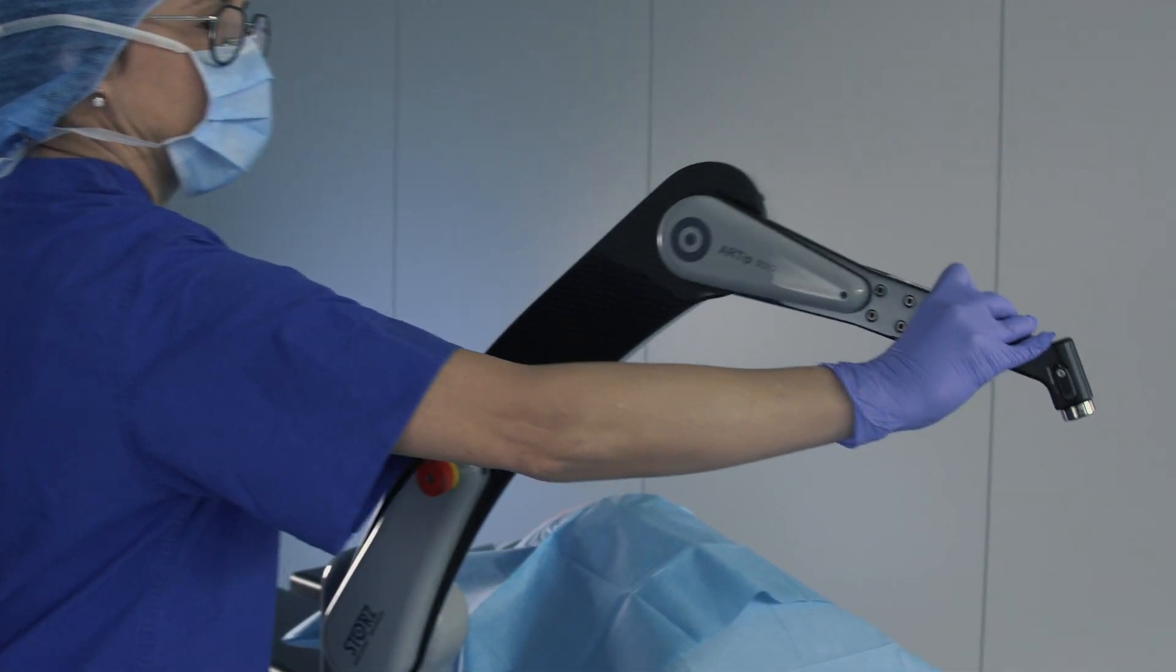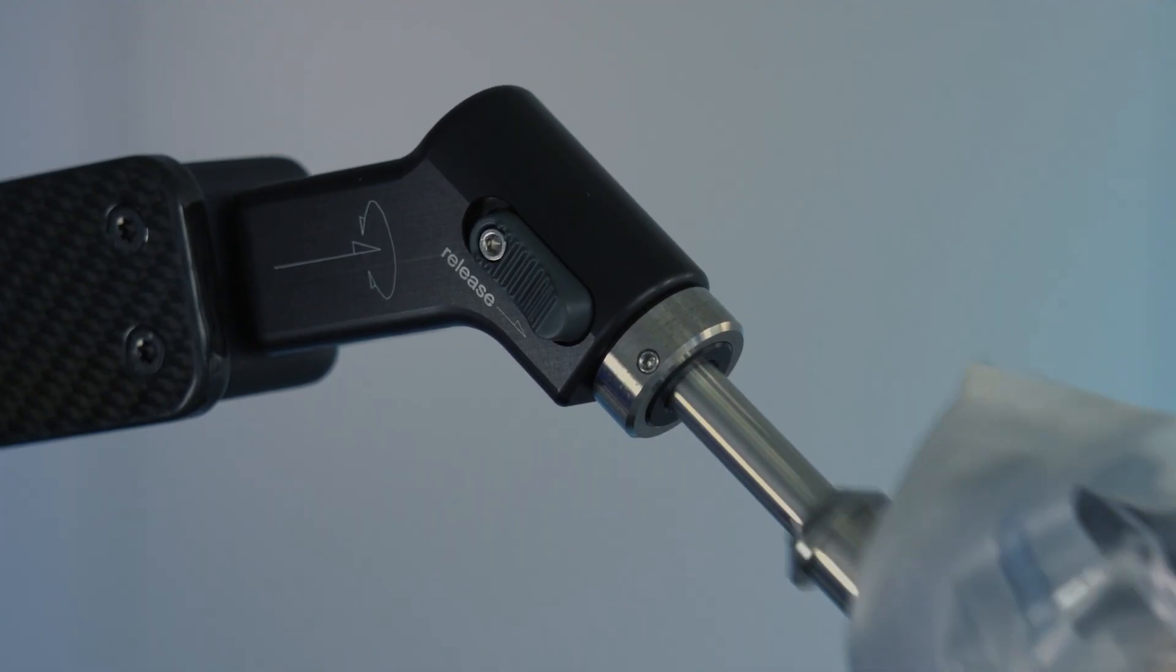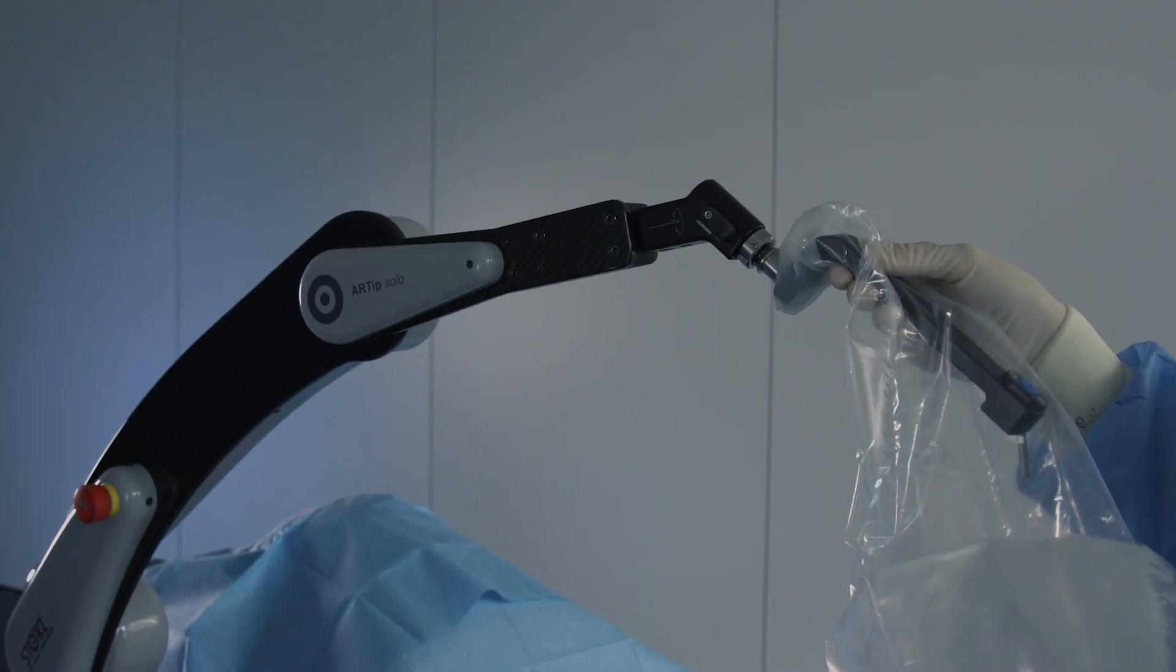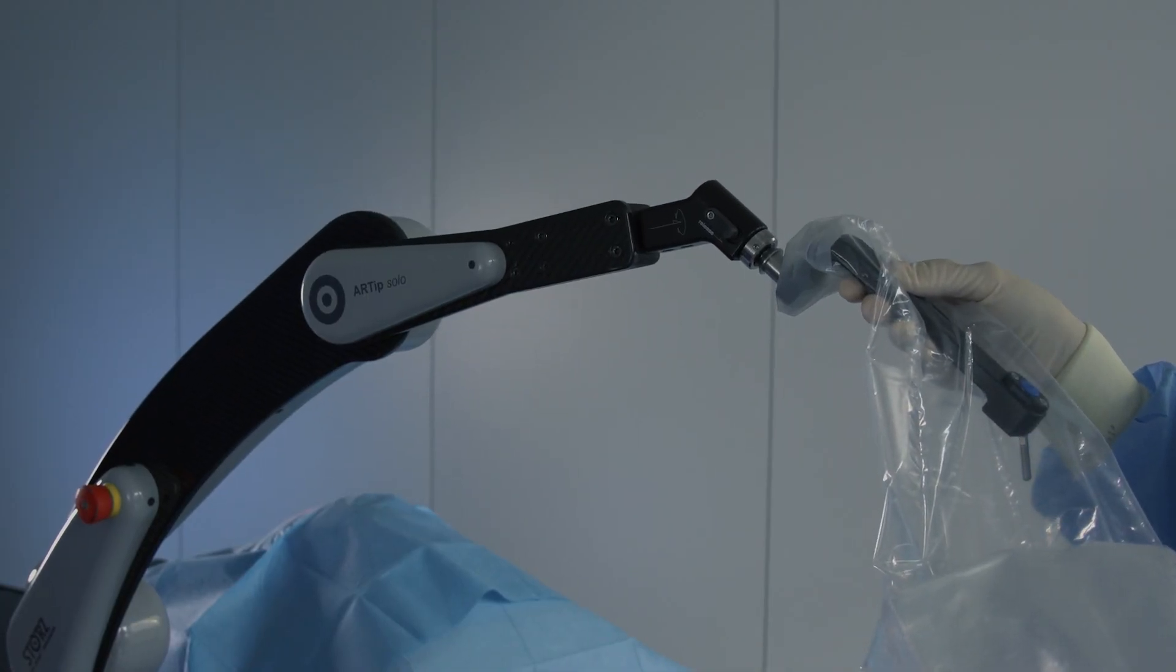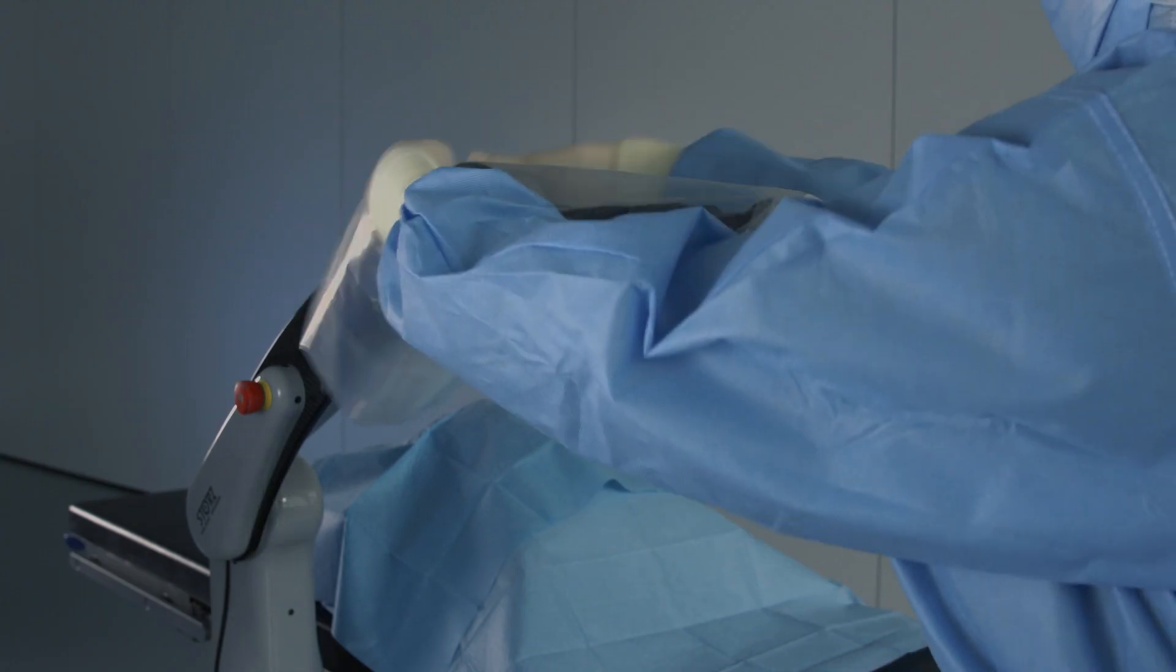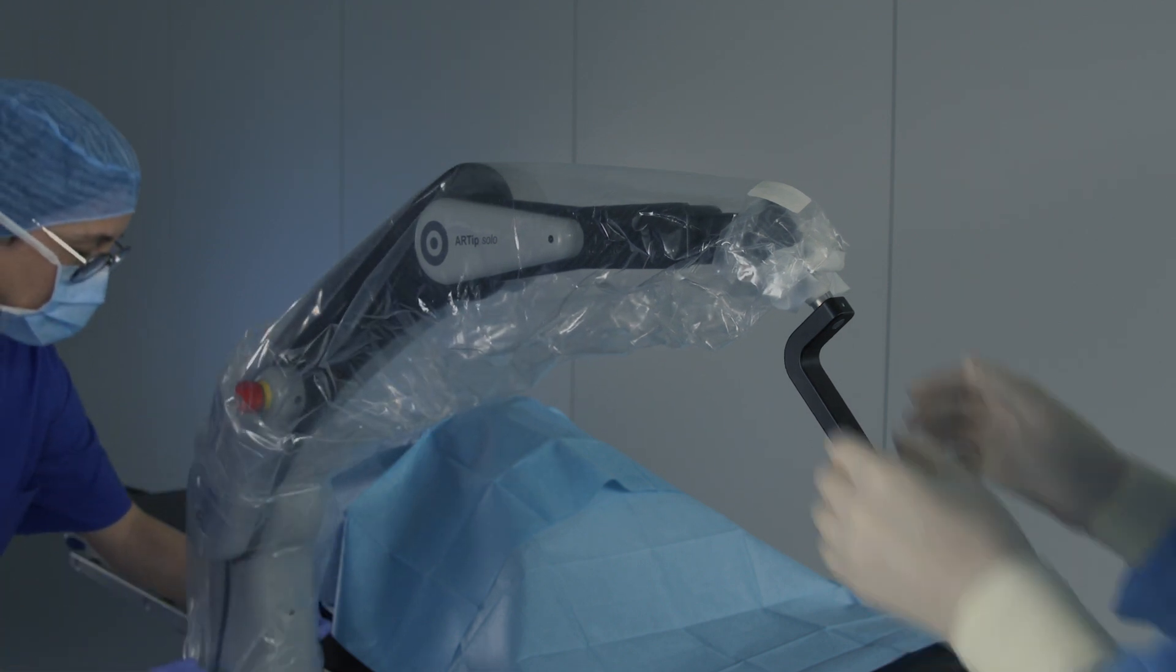Guide the sterile covered universal joint to the holding arm from below. Push the pin of the universal joint into the holding arm's connector until the universal joint locks audibly into place. Pull on the universal joint to ensure that it has engaged correctly. Take hold of the sterile cover and pull it over the arm. Pull downward together any excess length of the sterile cover.